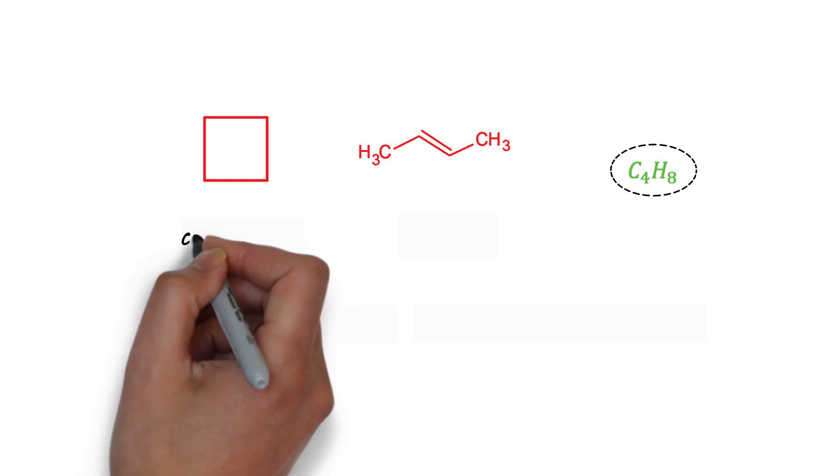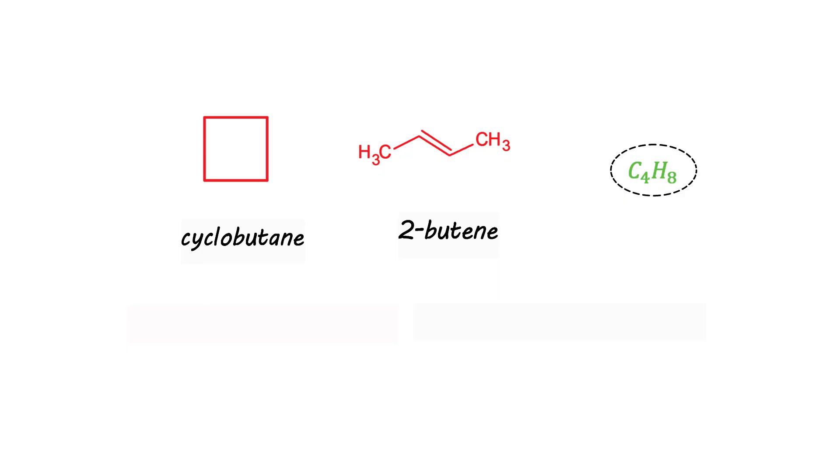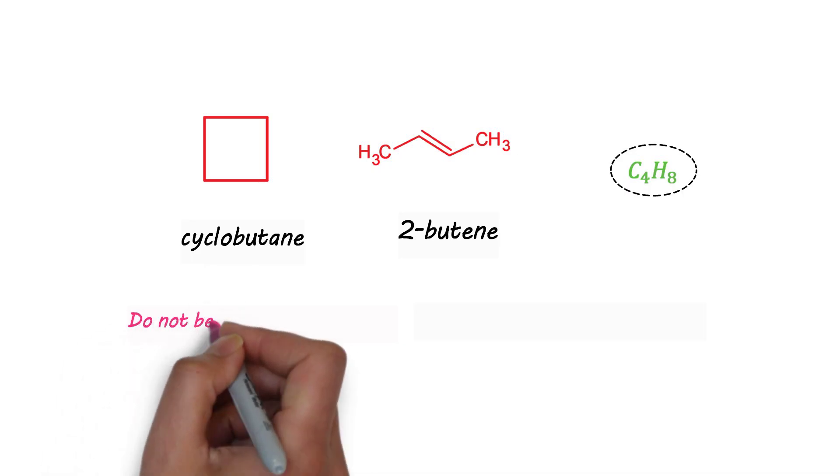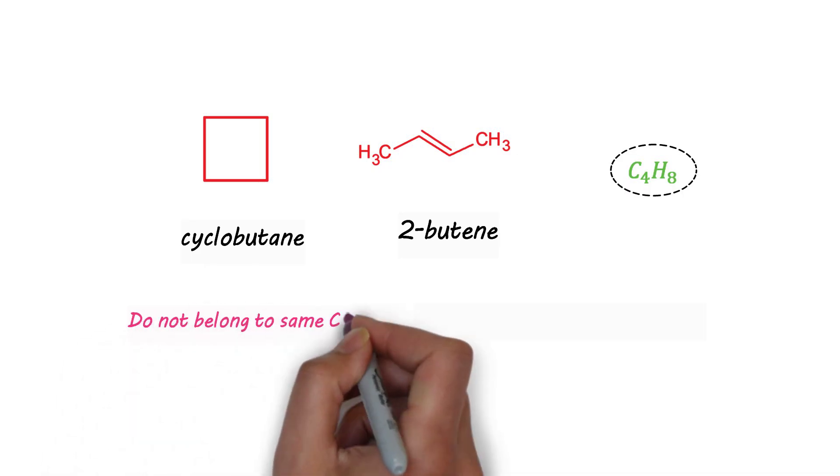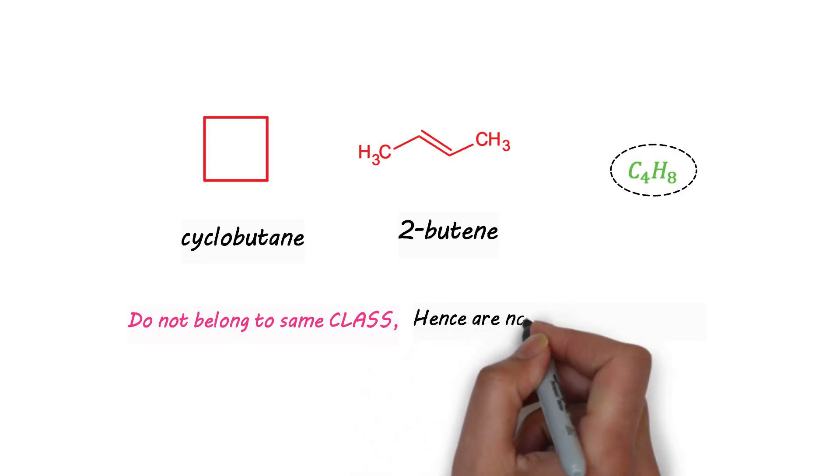In the next case the two molecules are having same molecular formula of C4H8, but first molecule is cyclobutane. The next molecule is 2-butene. As the two molecules differ in functionality so they belong to different classes. This means that such molecules do not belong to same class as is the condition for chain isomerism, hence they are not chain isomers.